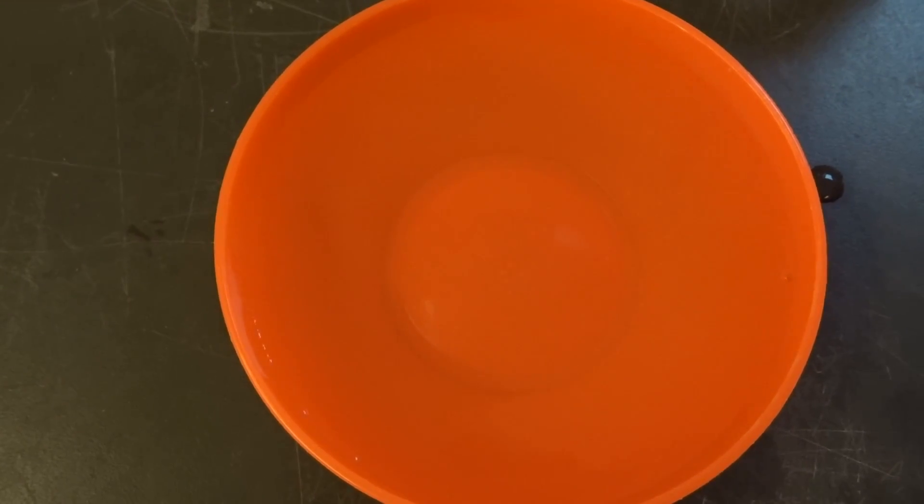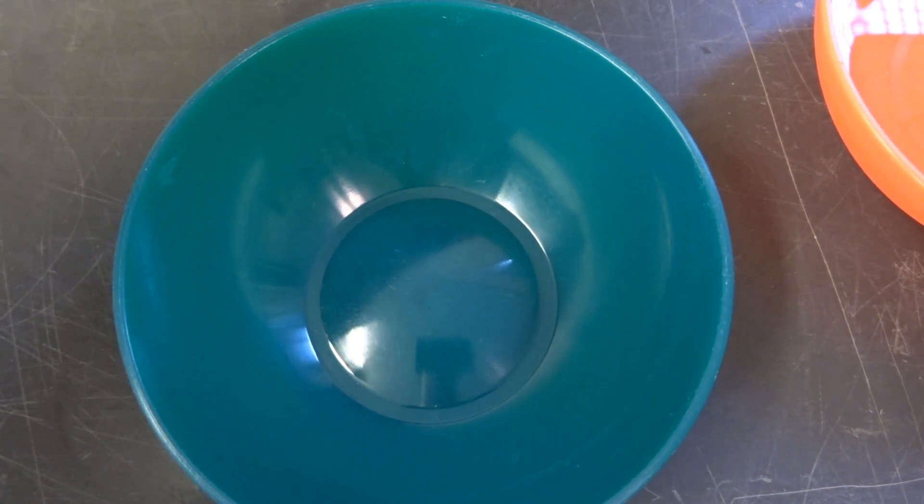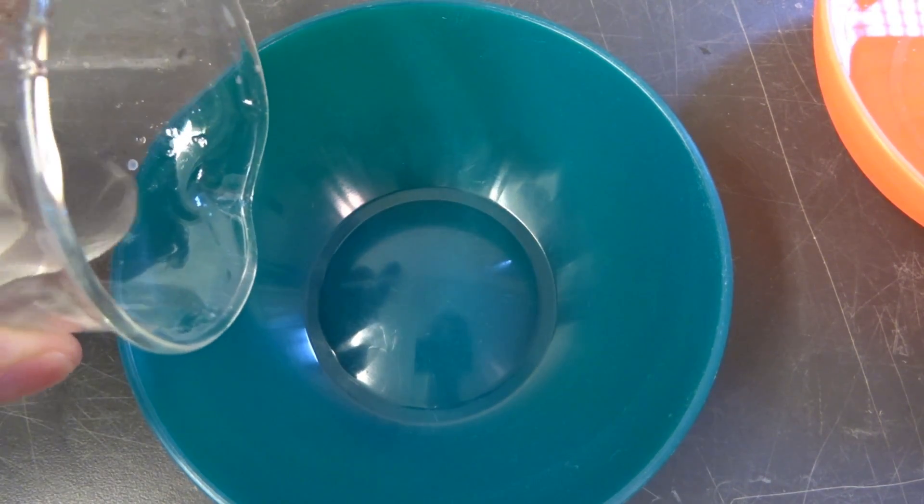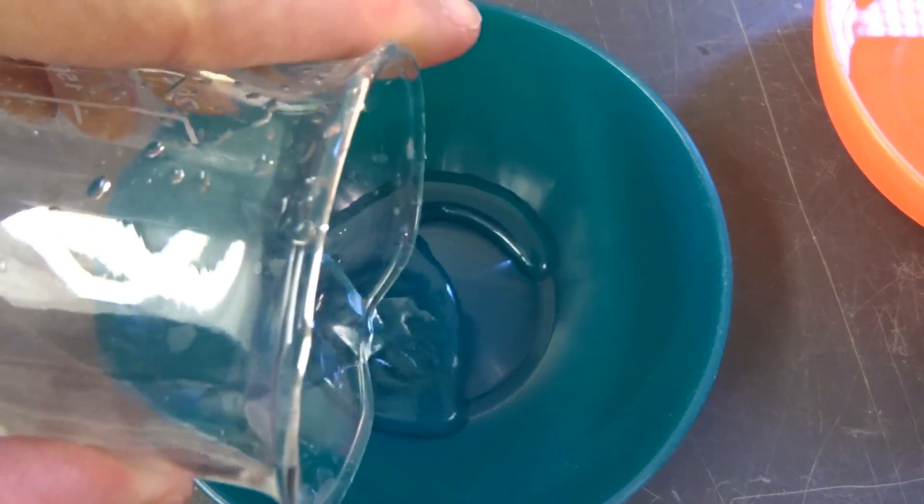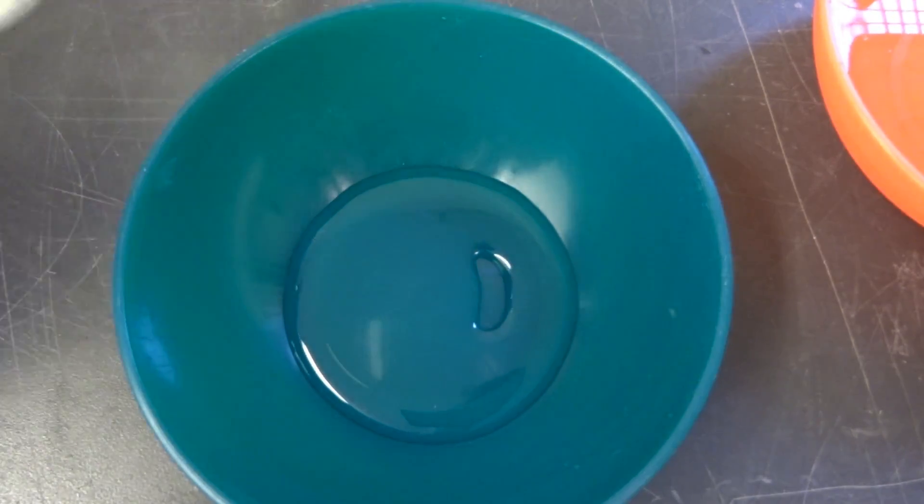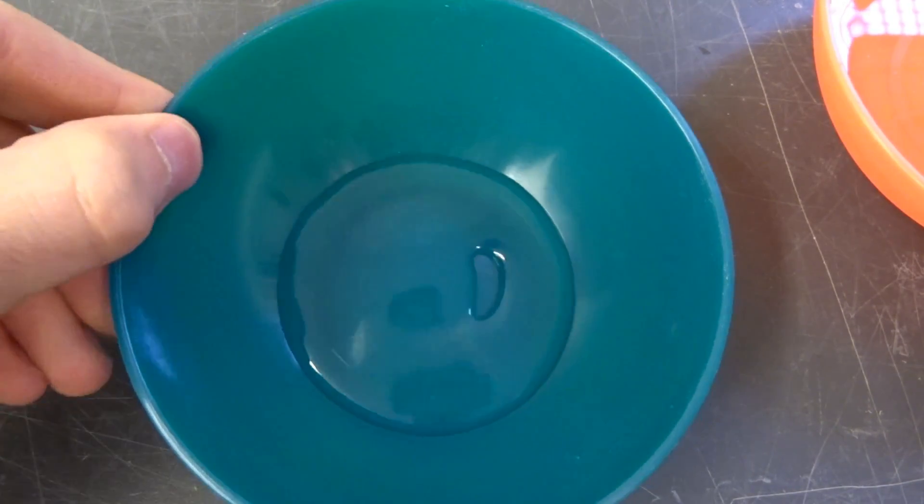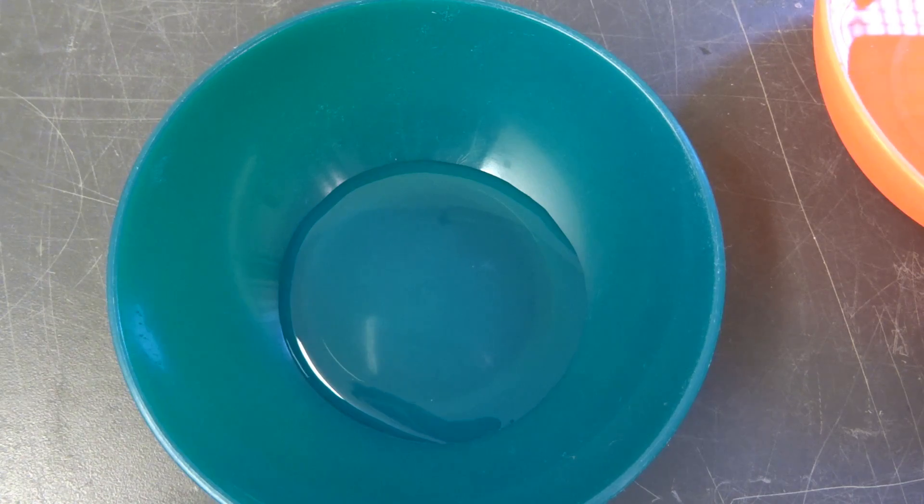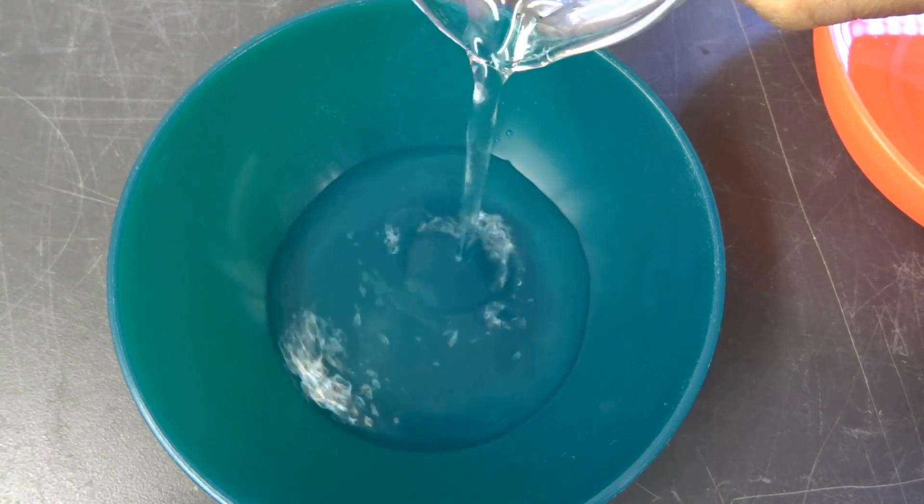So this was round one, and I can already tell you this one didn't work out. Here is round two, and I again cover the bottom of this little dish. And round two will actually make the gel that you saw in the beginning, so the red gel.